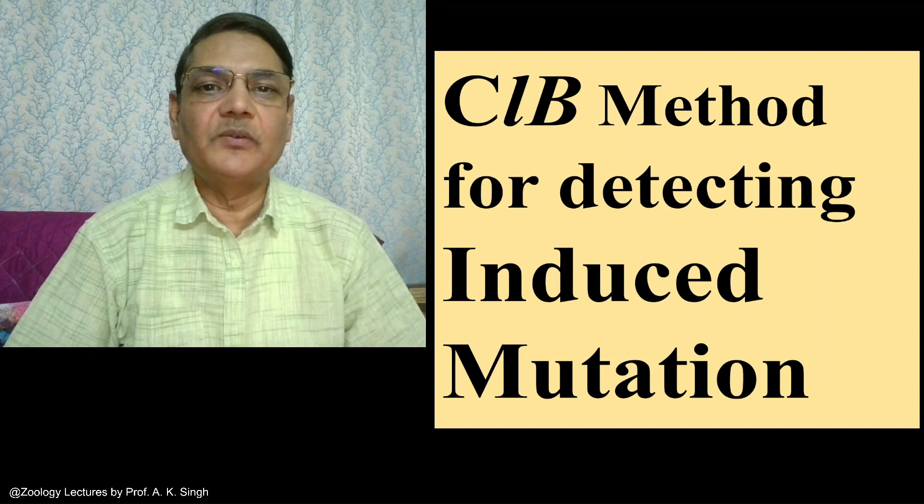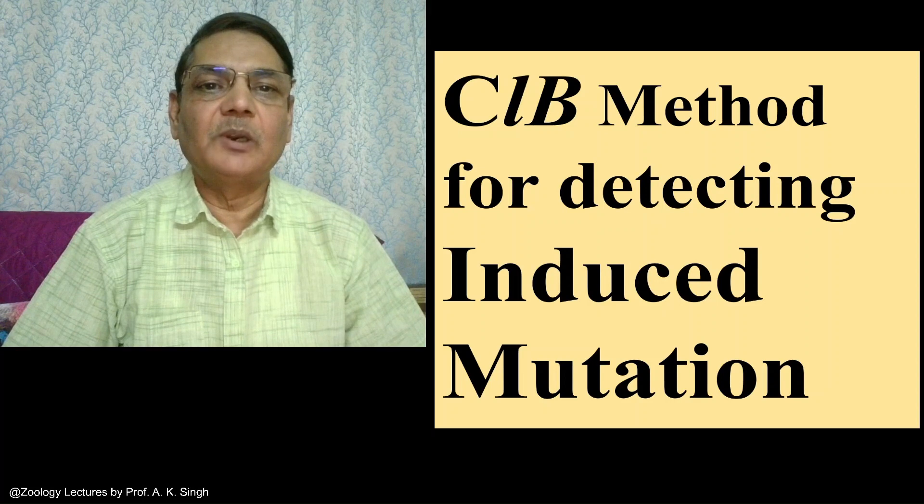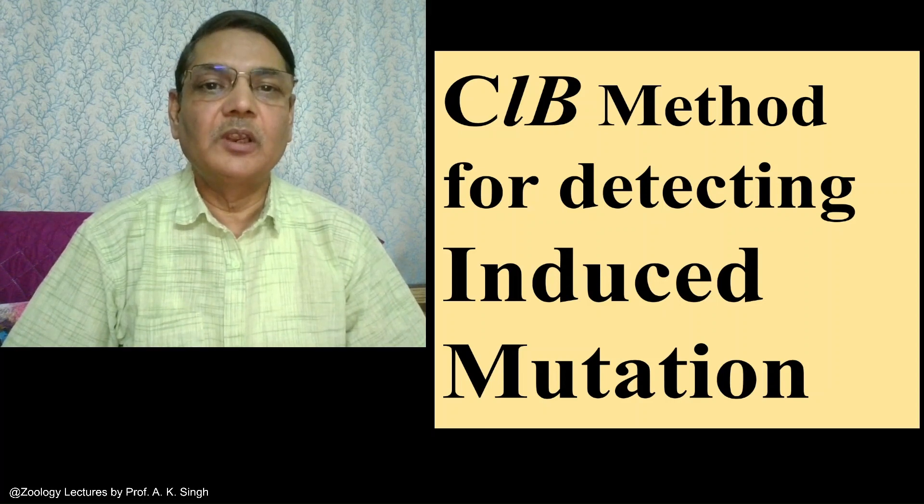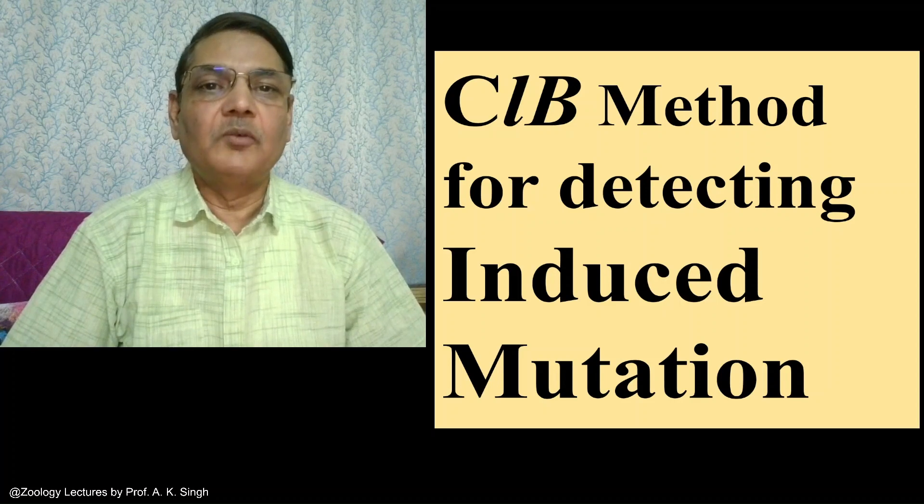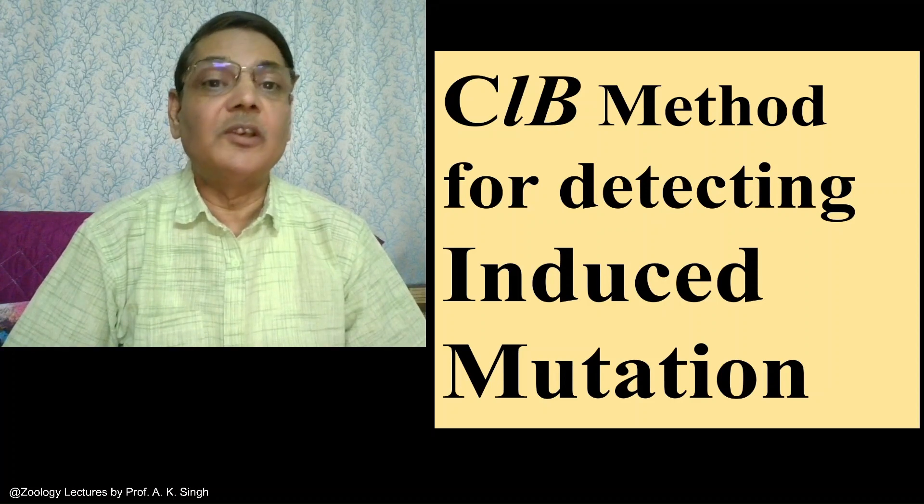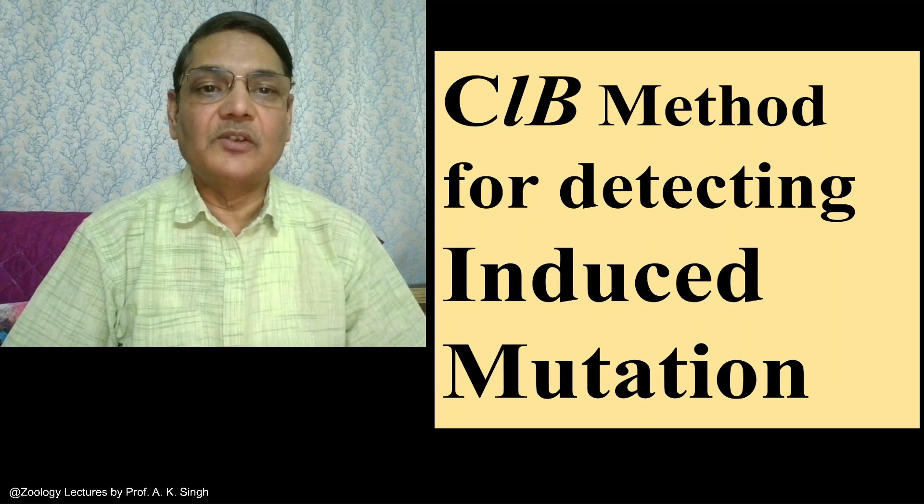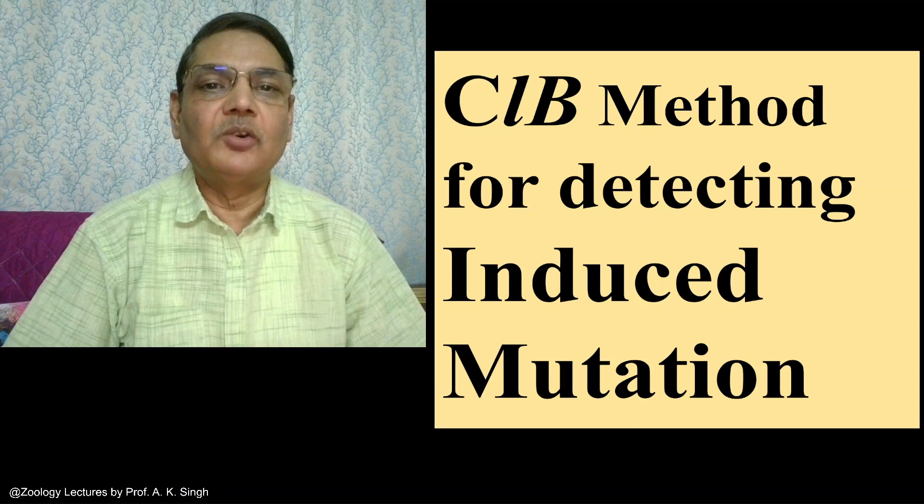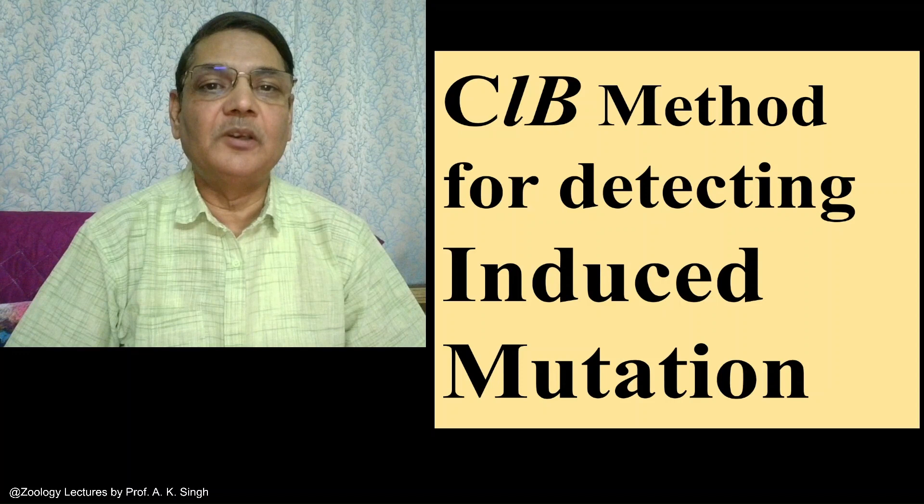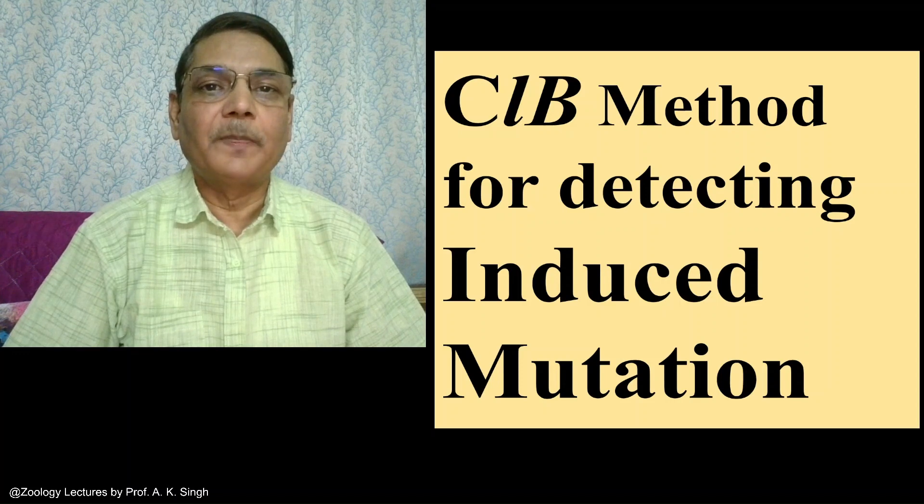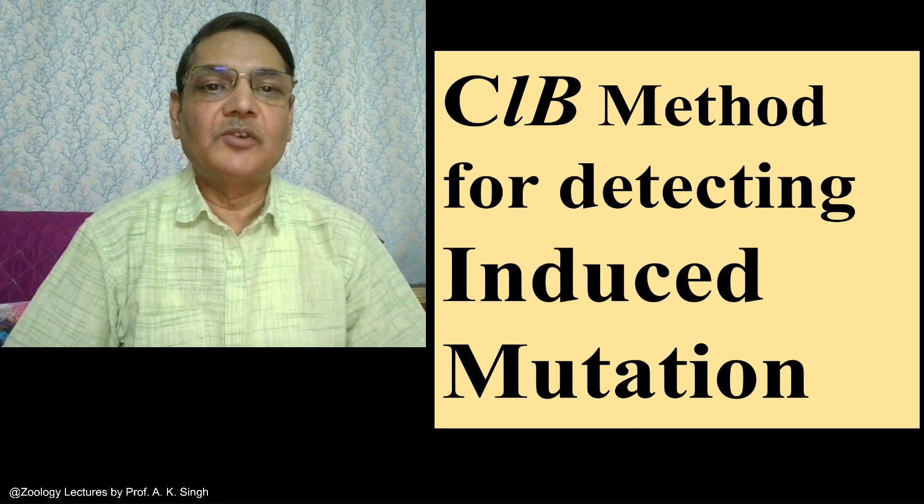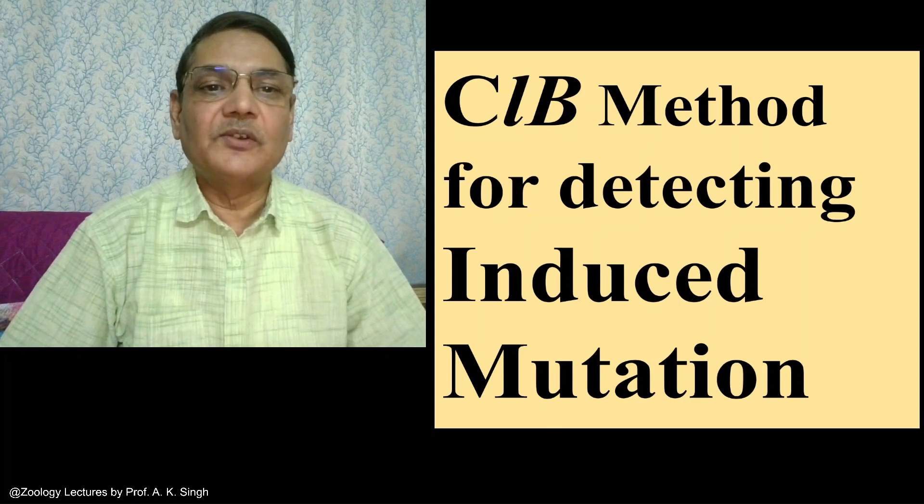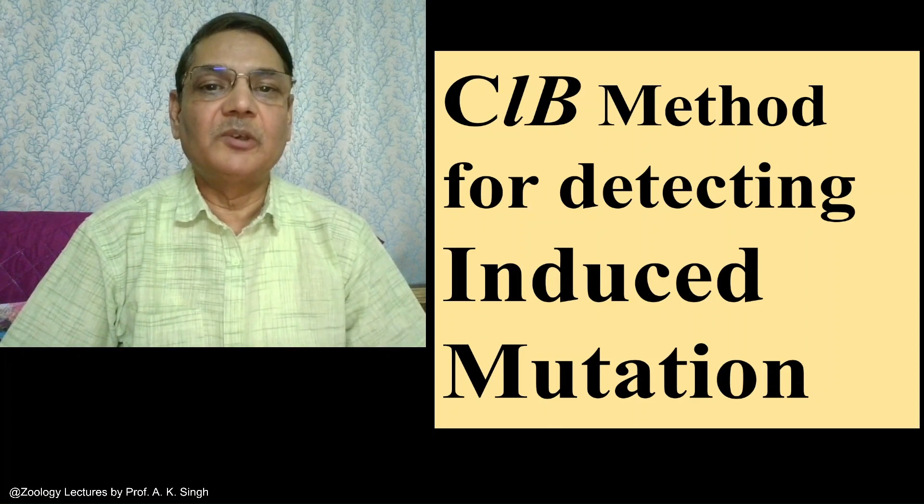It is now a well-established fact that there are several external agents which can induce mutation in our genetic material. The well-known agents are ionizing radiation like X-rays, and there is a long list of chemicals which are known to be mutagenic. Some of them are carcinogenic, that is they have the ability to cause cancer. One of the methods to know how X-ray could cause mutation in genetic material.